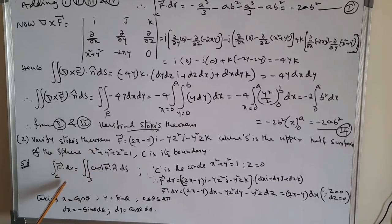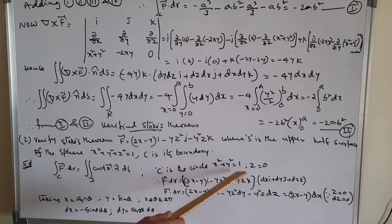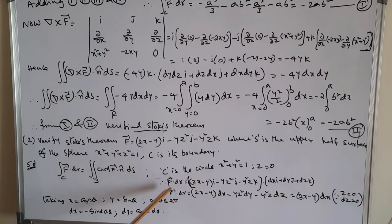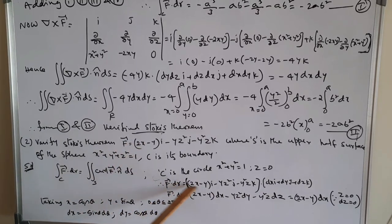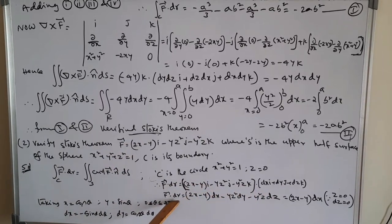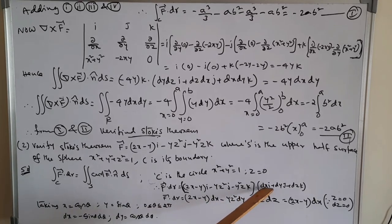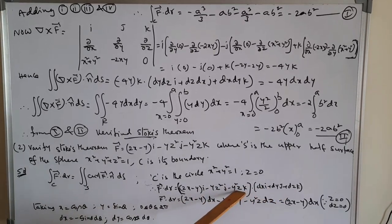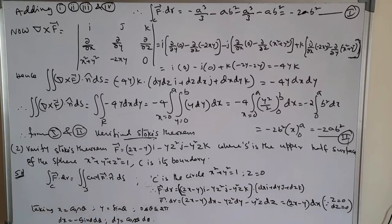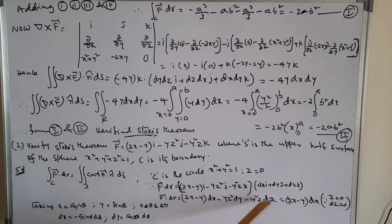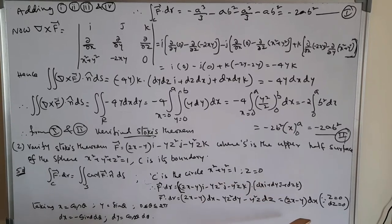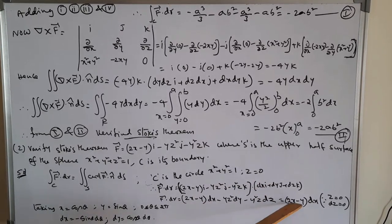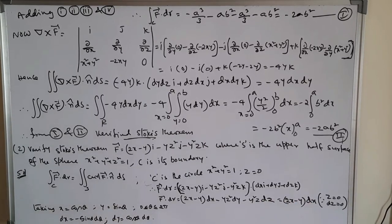The boundary C is the circle x² + y² = 1 with z = 0. So F̄ · dr̄ = (2x − y)dx − yz² dy − y²z dz. Substituting z = 0 and dz = 0, only the dx term remains: (2x − y)dx.